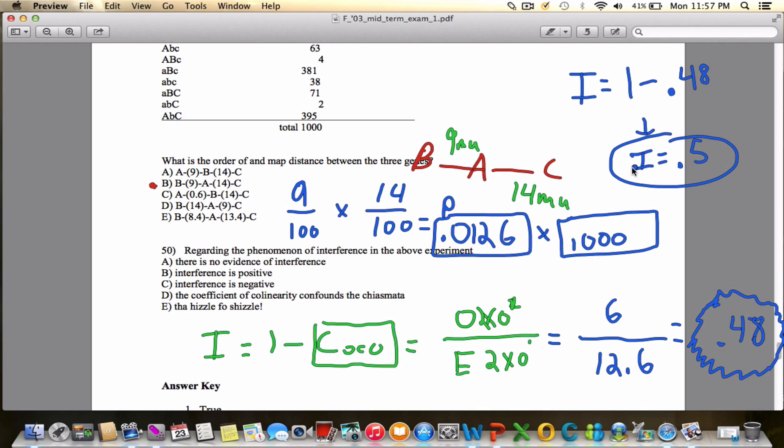If we have a positive interference, that should tell us that the crossover in one region is going to decrease the likelihood of another, which is also why our observed was smaller than our expected double crossover. So just to clarify that the answer for this would be B, the interference is positive.